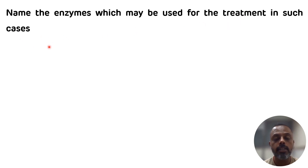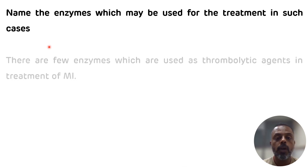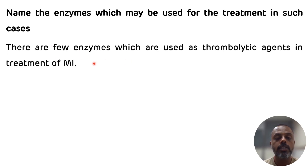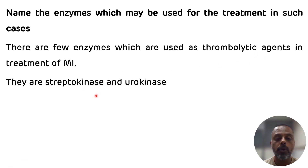Another question: name the enzymes which may be used for the treatment in such cases. The enzymes used in the treatment of MI are streptokinase and urokinase. These are the thrombolytic agents used in the treatment of MI — streptokinase and urokinase — which perform the lysis of the thrombus.